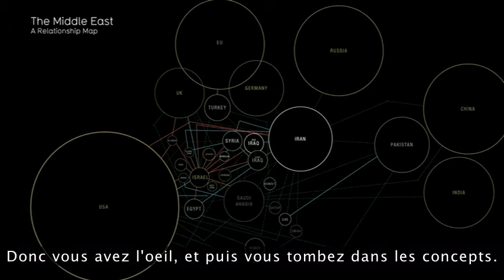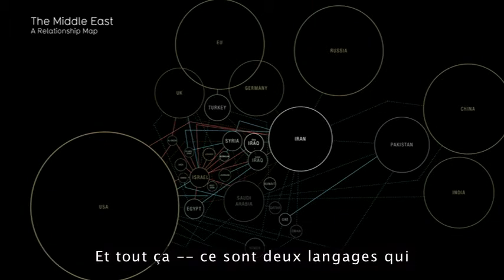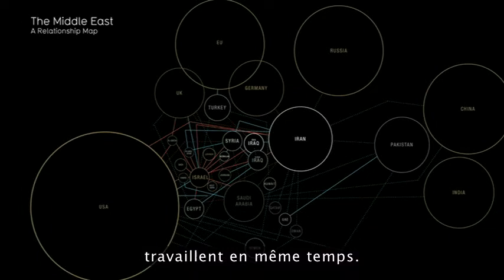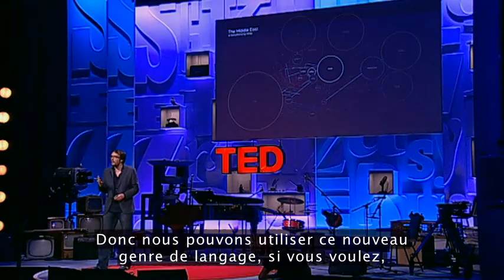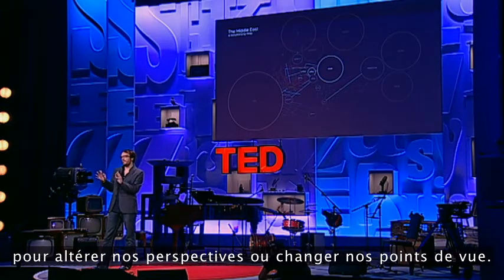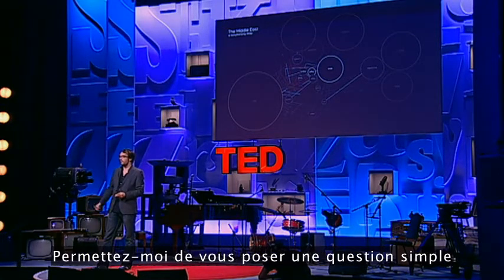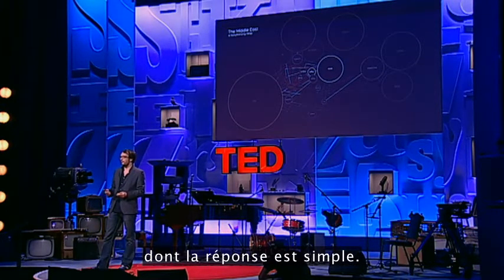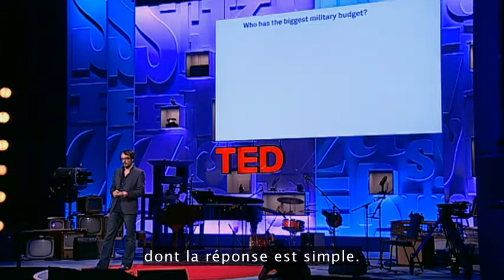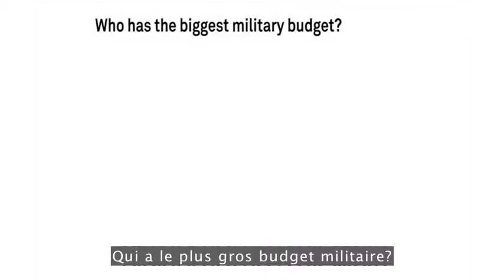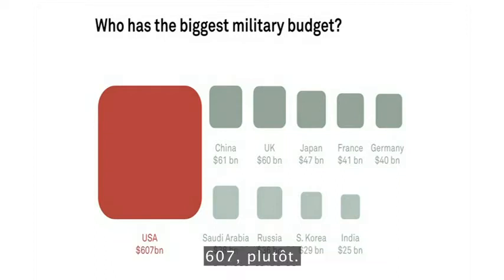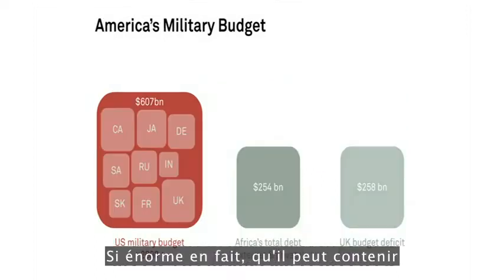So you have the eye, and then you drop in the concepts, and that whole thing is two languages both working at the same time. So we can use this new kind of language to alter our perspective or change our views. Who has the biggest military budget? It's got to be America, right? Massive — 609 billion in 2008. So massive, in fact, that it can contain all the other military budgets in the world inside itself.